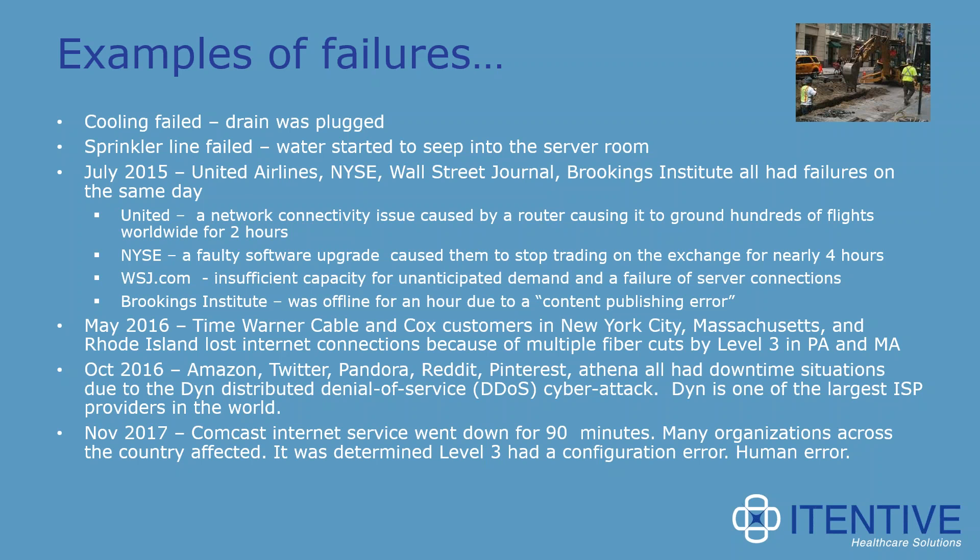Just a few months ago, Comcast internet service went down for about an hour and a half, and many organizations across the country were affected by the outage. It was determined that Level 3 had a configuration error. The point of this slide is to remind us of the various types of failures that can happen and that they can occur because of things outside of our control. When they're outside of our control, we're basically at the mercy of these organizations and these types of attacks.